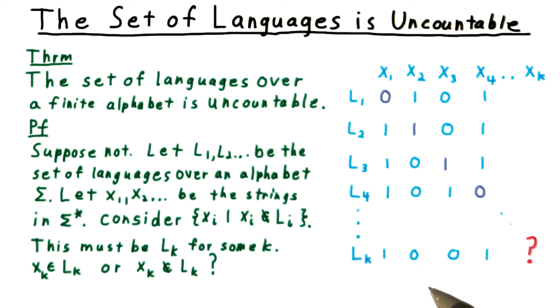Another way to think about this argument is to say that this language here must be different from every row in the table because it is different on the diagonal element. In any case, we have a contradiction and can conclude that this enumeration of the languages was invalid since the rest of our reasoning was sound.